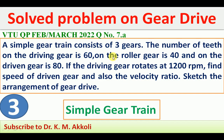The first gear is the driving gear, having 60 teeth, and the driven gear has 80 teeth. In between them there is a roller gear, also called an idler gear or intermediate gear, having 40 teeth.